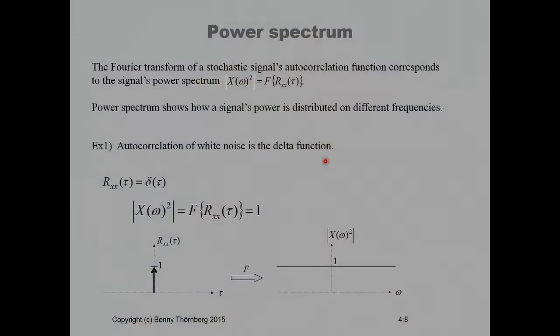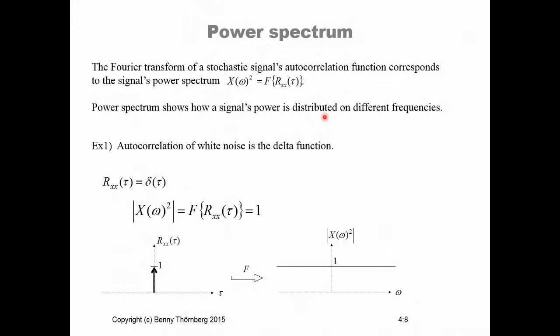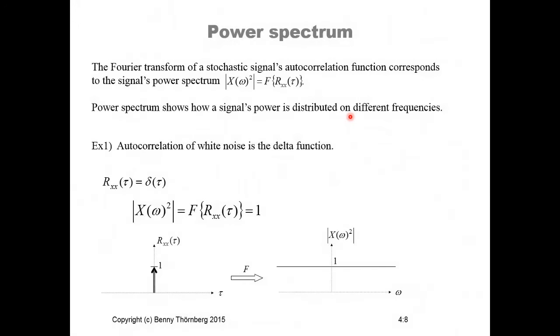The power spectrum of a signal is actually the Fourier frequency transform computed on the autocorrelation function. And the power spectrum, as mentioned before, shows how a signal's power is distributed onto different frequencies.